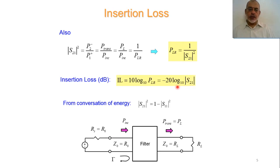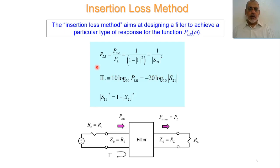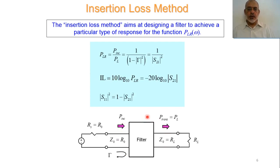Combining the two definitions: the Power Loss Ratio equals P_incident / P_load, which equals 1 / (1 - |Gamma|²), which equals 1 / |S21|². In dB, the insertion loss is 10 log₁₀(PLR) = -20 log₁₀|S21|. We are going to use this insertion loss to design the required filter.